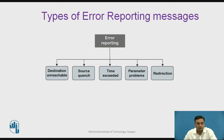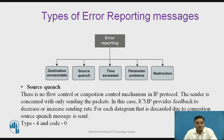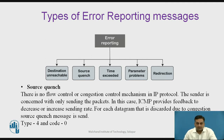The next type of error reporting message is the Source Quench message. Since there is no flow control or congestion control in the Internet Protocol, the sender is only concerned with sending packets to the destination. ICMP provides feedback to the source to decrease or increase the sending rate. For each datagram discarded due to congestion, a Source Quench message is sent. The type field contains value 4 and the code field contains value 0.